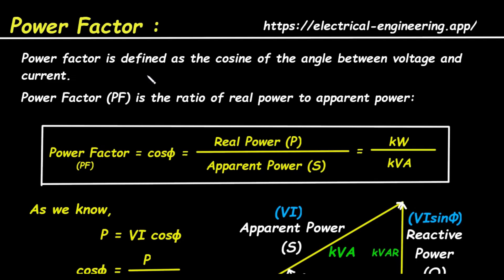Let's begin with the fundamental definition. Power factor is defined in two primary ways. First, it is the cosine of the angle between the voltage and the current in an AC circuit. Second, power factor, often abbreviated as PF, is the ratio of real power to apparent power.